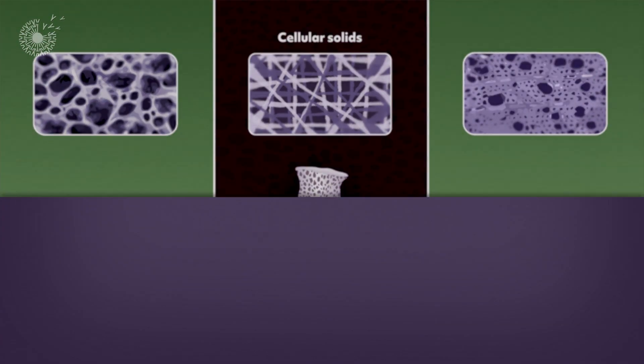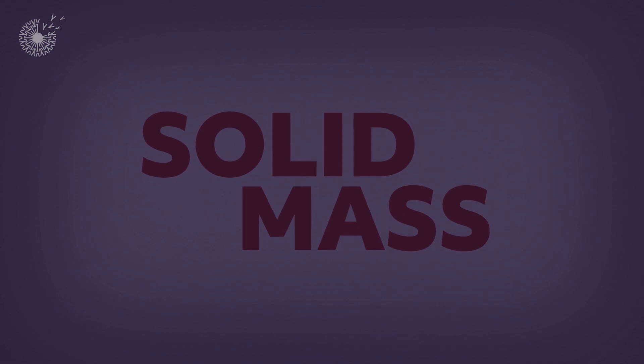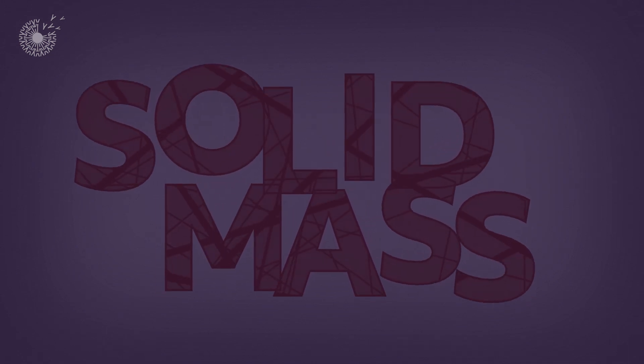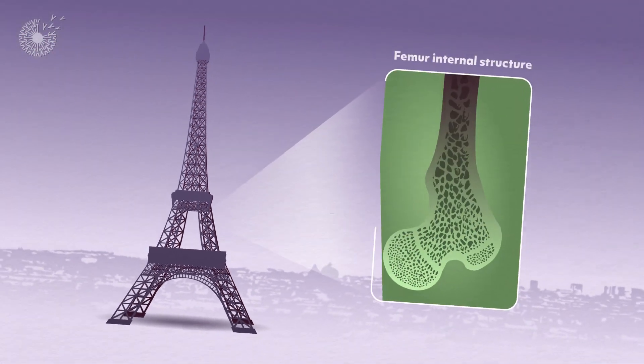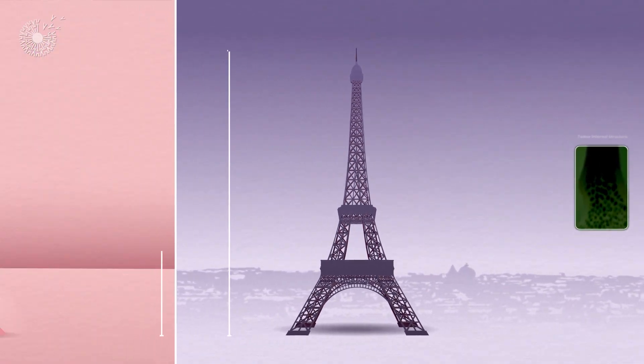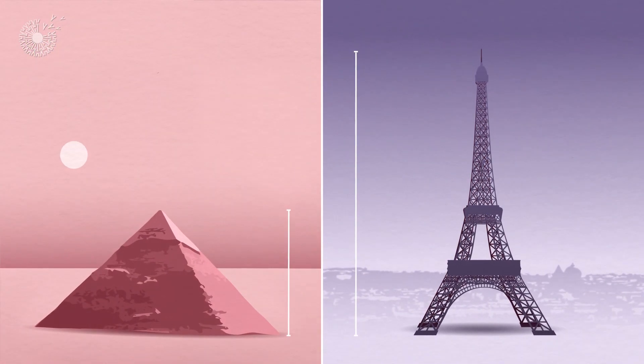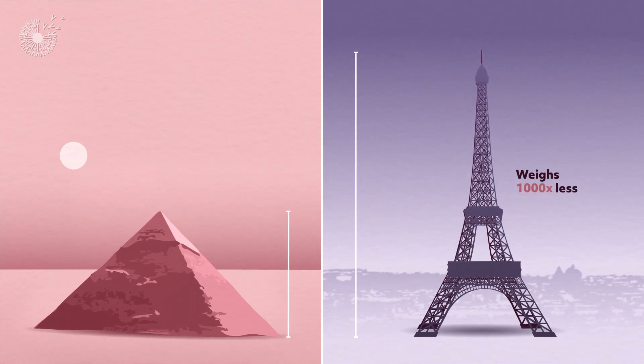Humans too have made tremendous strides by learning to replace solid mass with open cellular structures. The Eiffel Tower, whose network of trusses was modeled on the internal structure of a bone, is twice as tall as the Great Pyramid of Giza, but it weighs a thousand times less.